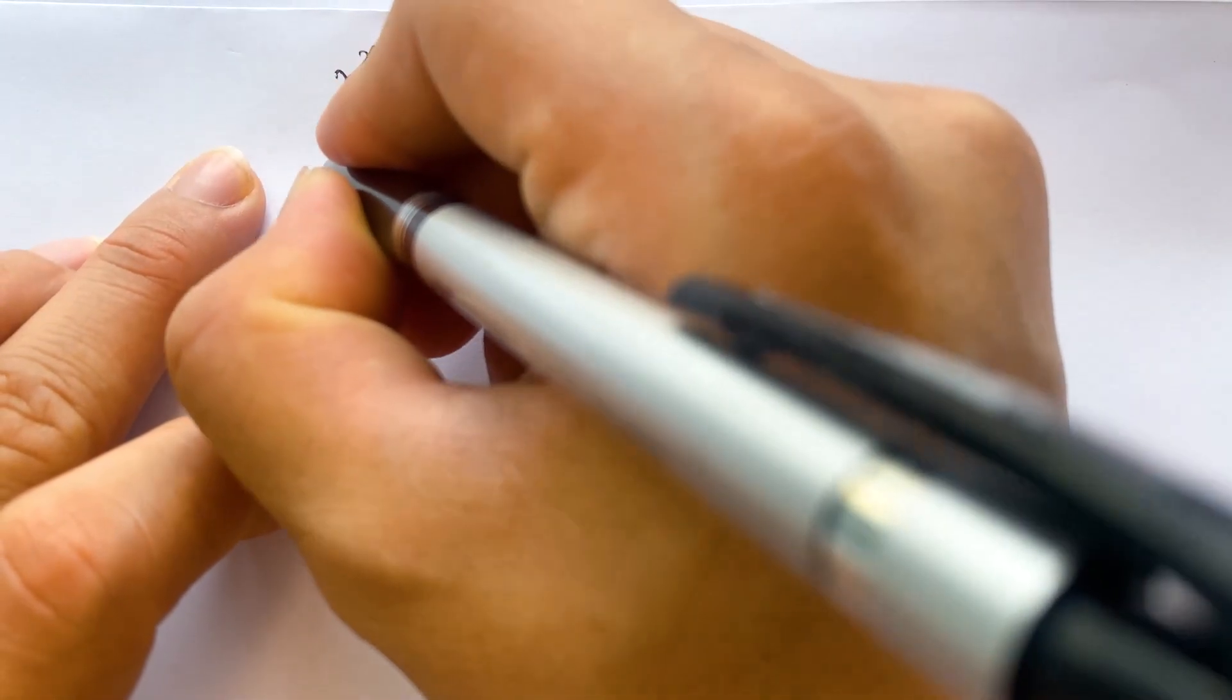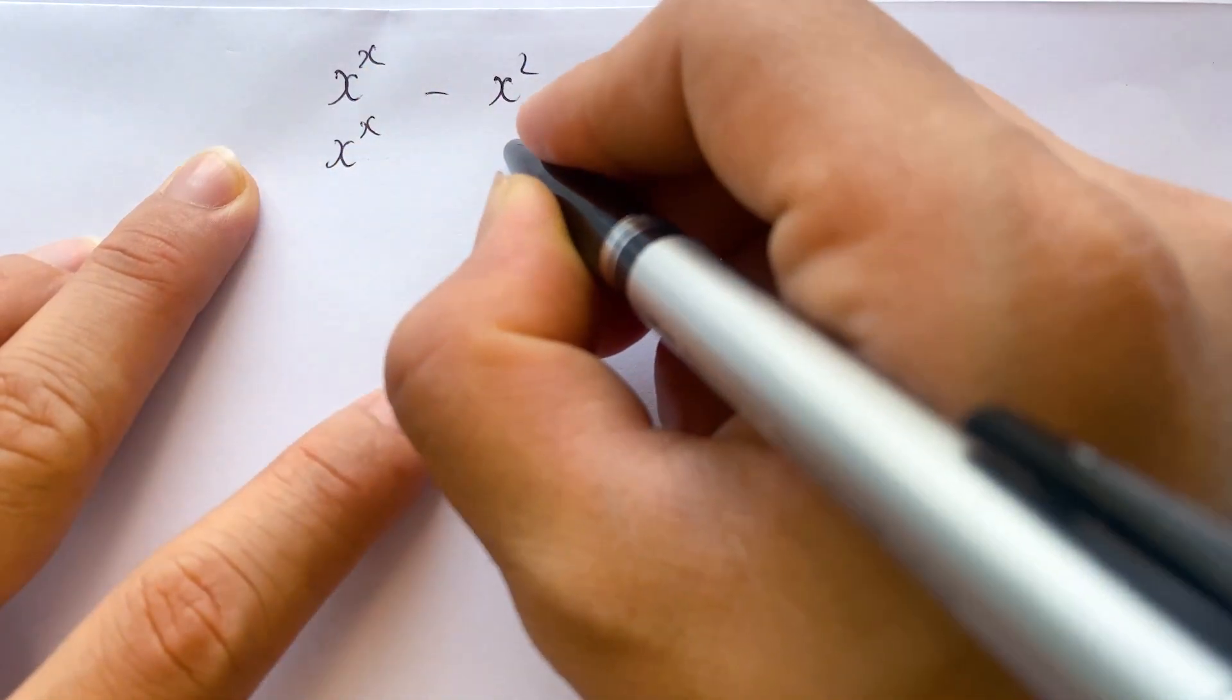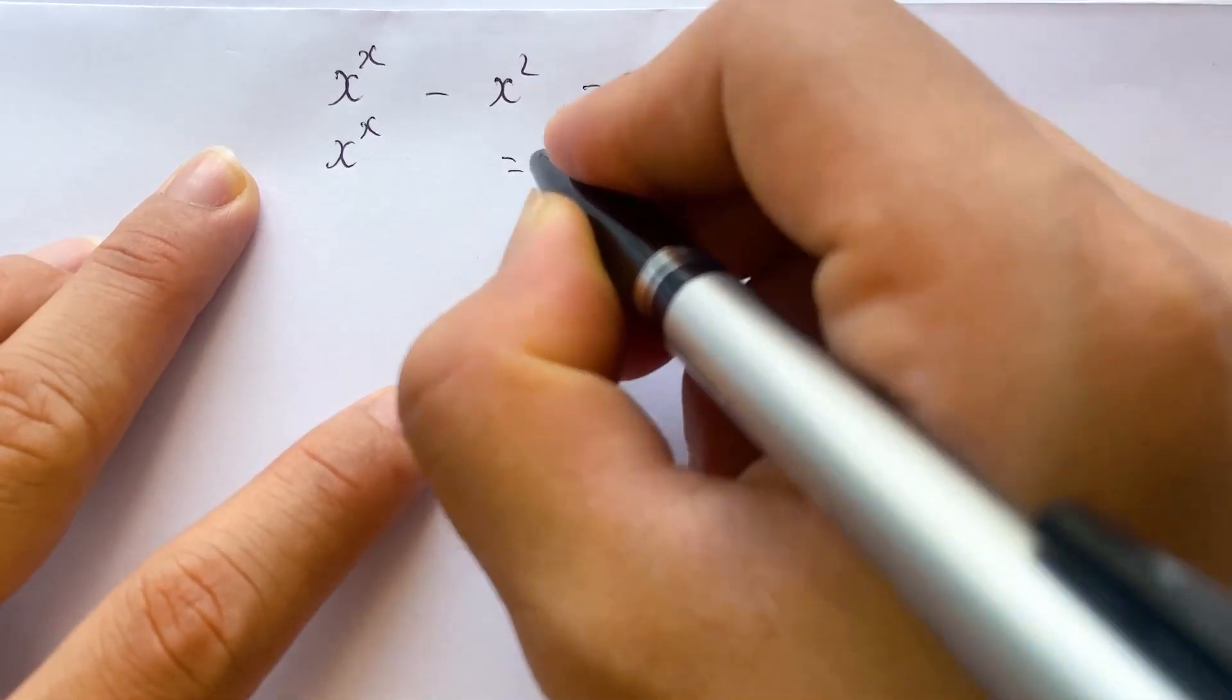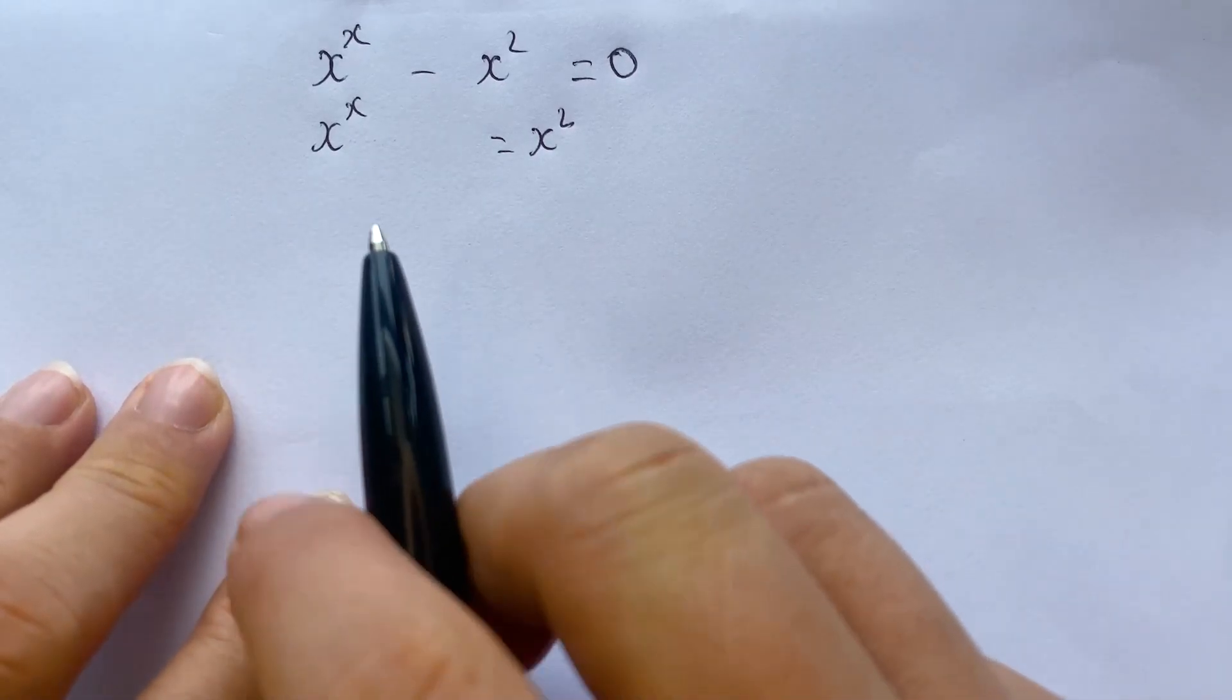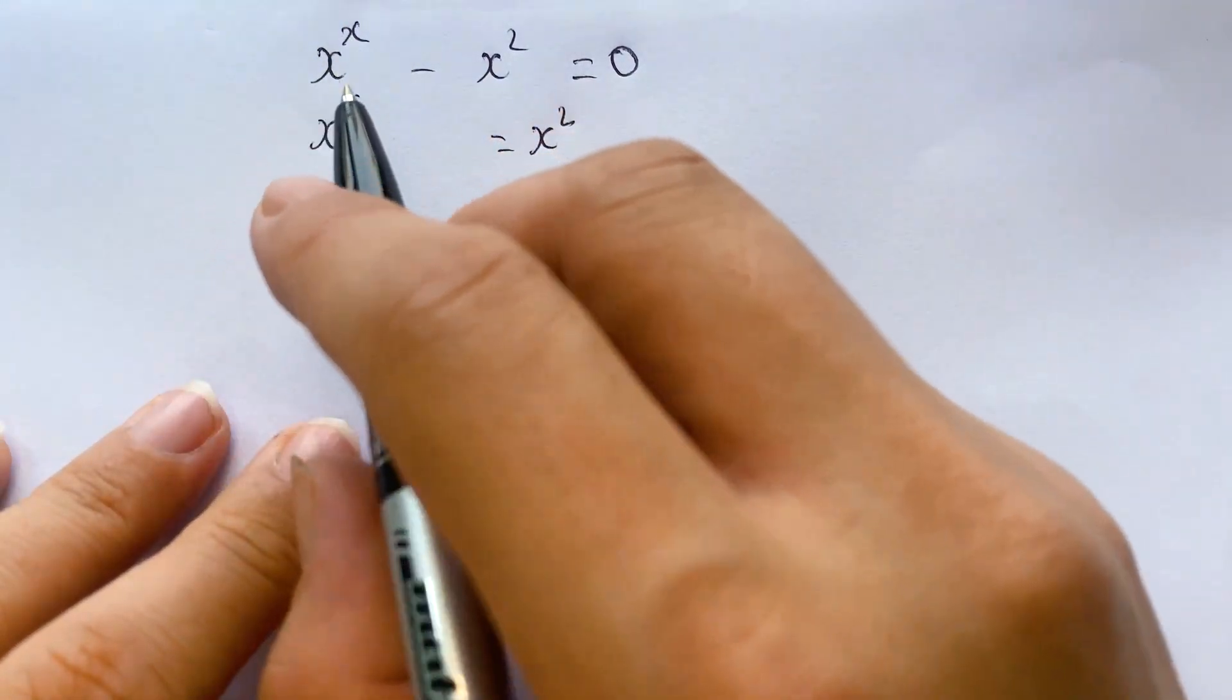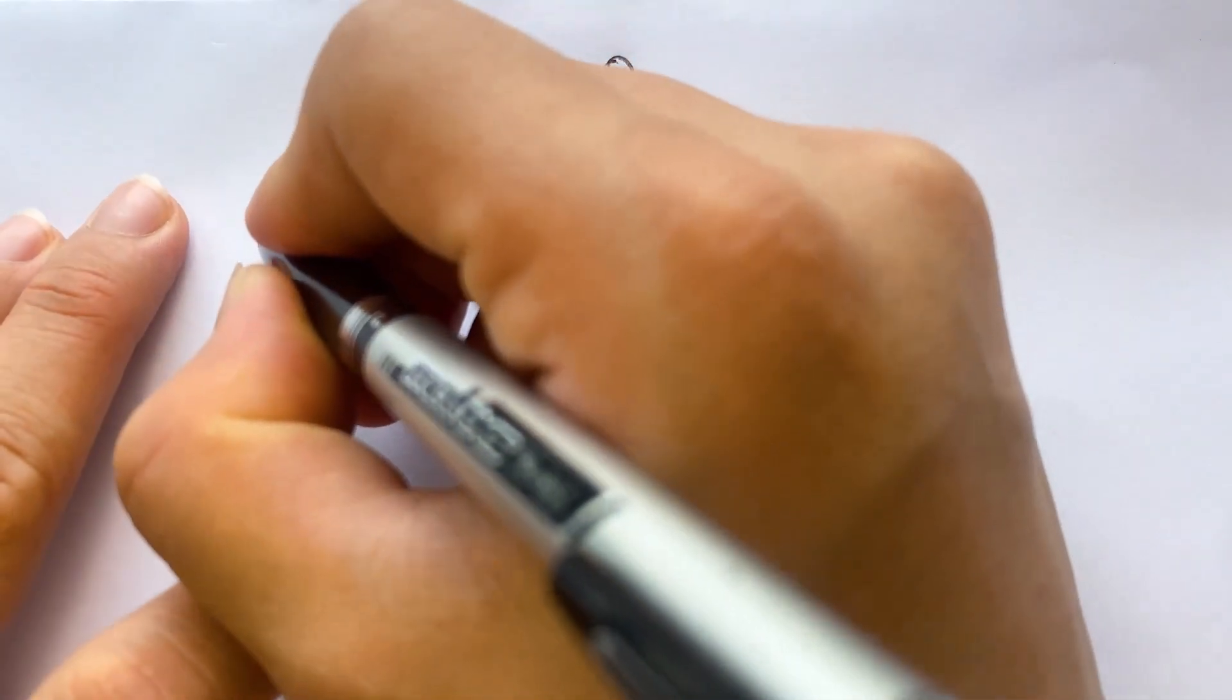For the equation, you can rewrite x power x equals x square. And then for the first step, you can take natural logarithm of both sides.